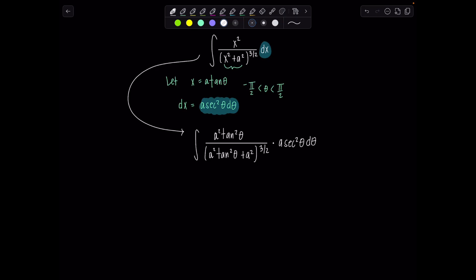Beautiful. Now here is where the beauty of trig sub really shines. What we're going to do is factor out a squared and then we're left with tan squared theta plus one, and then this is all raised to the three halves power. We're going to use our Pythagorean identity so that we can simplify. We're going to replace tan squared theta plus one with secant squared theta.